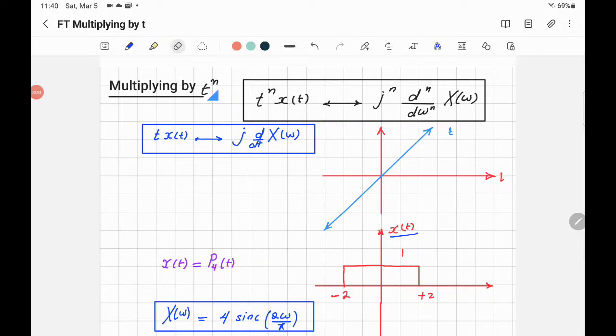Another important property of Fourier transform is what happens when you multiply X by t to the power of n. To find its Fourier transform, first find Fourier transform for X, which is equal to X, and then differentiate it with respect to omega n times, and then the result multiplied by j power n.